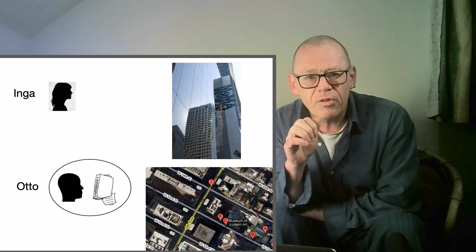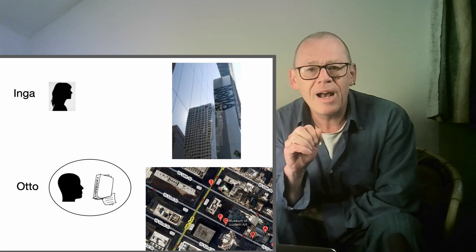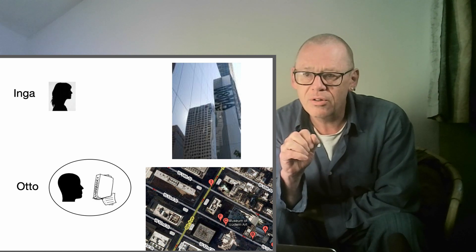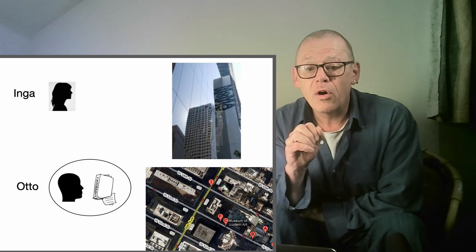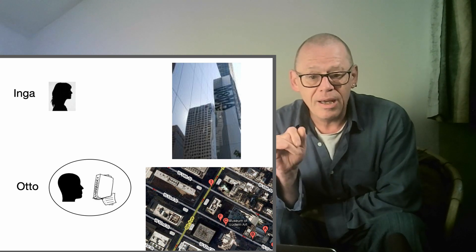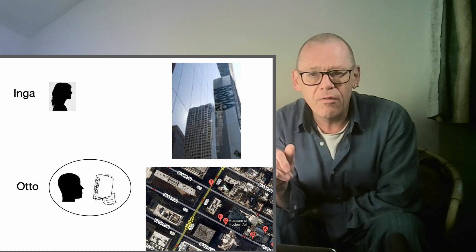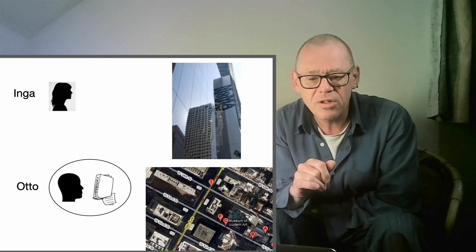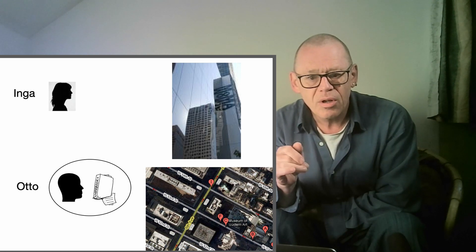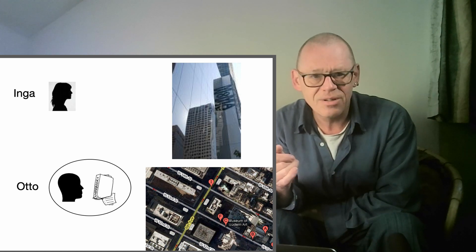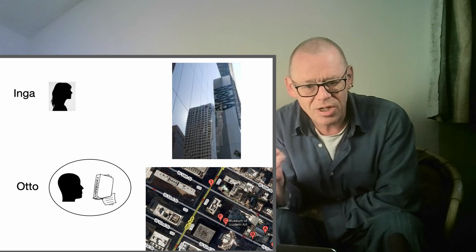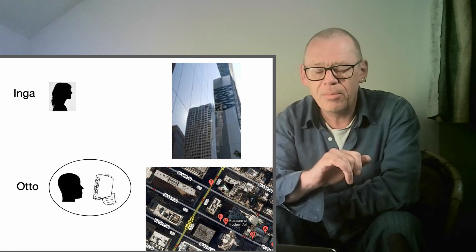What is the role of the notebook here? Is there any argument beyond brain chauvinism for including Inge's remembering of the museum's location, and Otto's notebook facilitated remembering of the museum's location? It's a thought-provoking example.